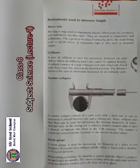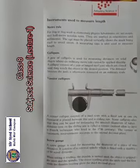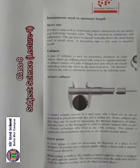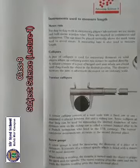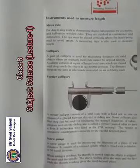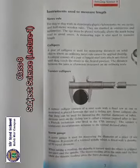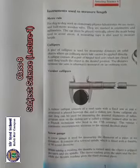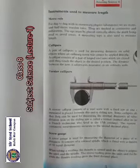The thimble is pressed until the object is fixed between the anvil and spindle. The sleeve reading gives the units and the first two decimal places, while the thimble reading gives the third decimal place.